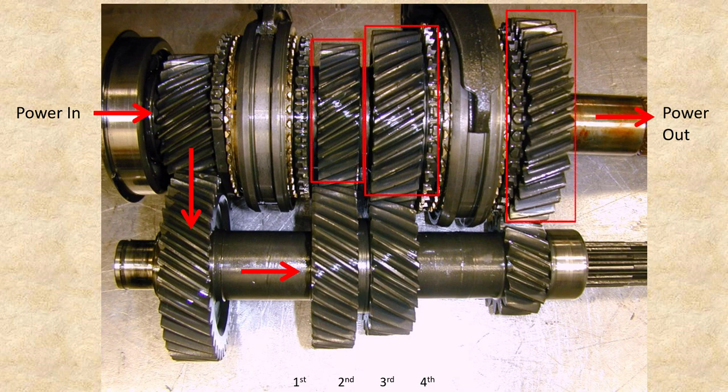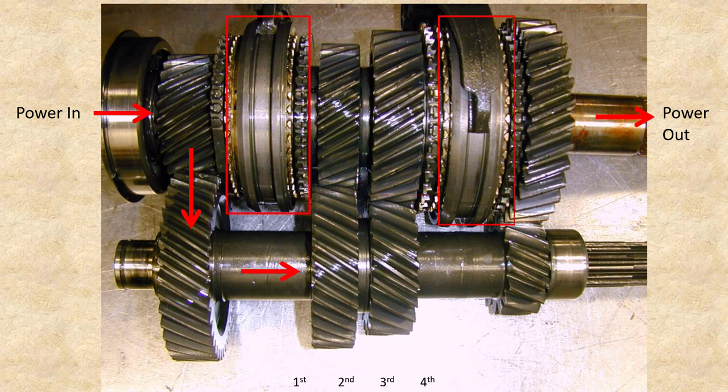The three gears on the top right are driven output gears and they can rotate freely on a bearing that is supported by the output shaft. The two synchronizers are connected to the output shaft.